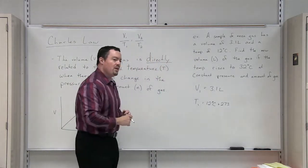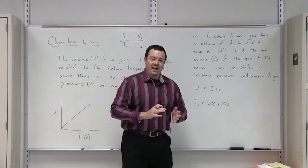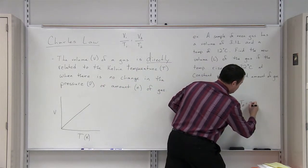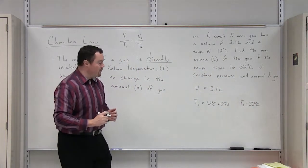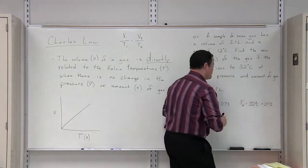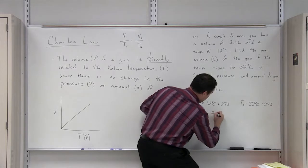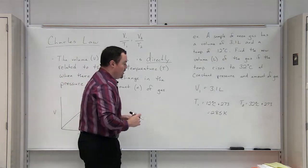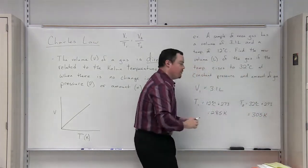The problem also tells us that we increase the temperature to 32 degrees Celsius. So that is going to be our temperature at condition number 2. Once again, it being in Celsius, we have to convert that temperature to Kelvin by adding 273. So our temperature number 1 will be 285 Kelvin and our temperature number 2 will be 305 Kelvin.